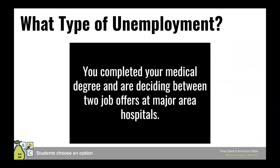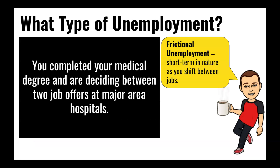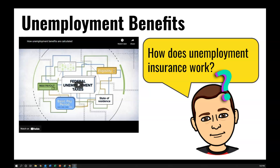Finally: you completed your medical degree and are deciding between two job offers at major area hospitals. You would be frictionally unemployed — your skills are desired and wanted, and you are likely to get a job in the near future as you shift from one position to the next. When you're unemployed, the government does provide benefits to you and your family in the short-term while you look for new work — called unemployment benefits. I'll link a video explaining how unemployment benefits are calculated in the description. We'll work on some practice in class, and there's an assignment on Schoology. See you soon.